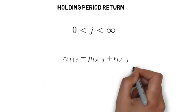So let J be the holding length. Now every J-period holding return can be decomposed into a predictable and a noise component. We write that as follows.